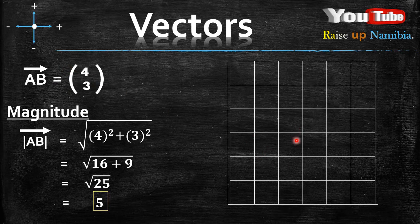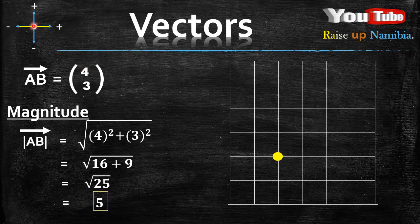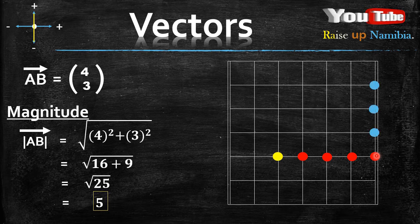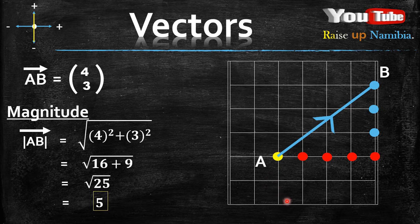To draw this vector on squared paper, choose a starting point anywhere. On the x-axis, we're given a positive 4, so from the origin we move four lines to the right. Then on the y-axis, we're given a positive 3, so from where we stopped we move three lines upward. Then we go back to where we started, draw a line, indicate the direction, and label our vector.